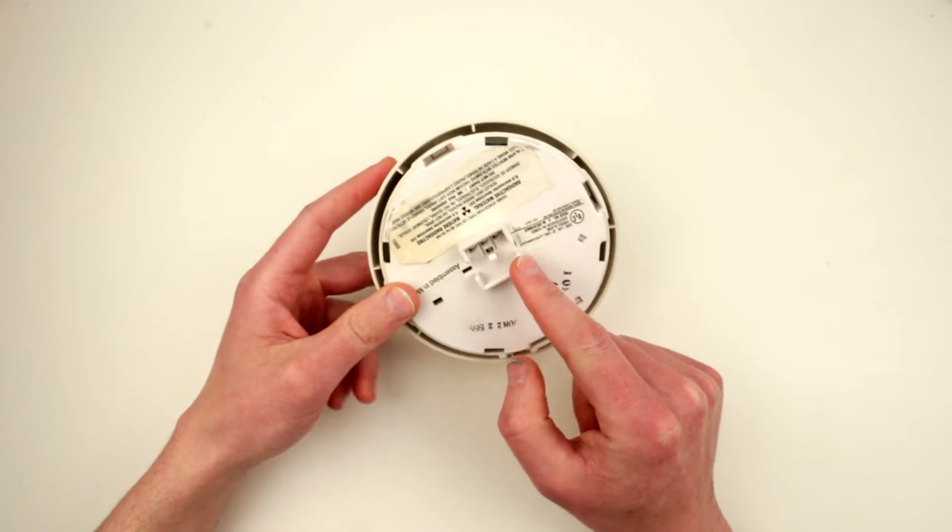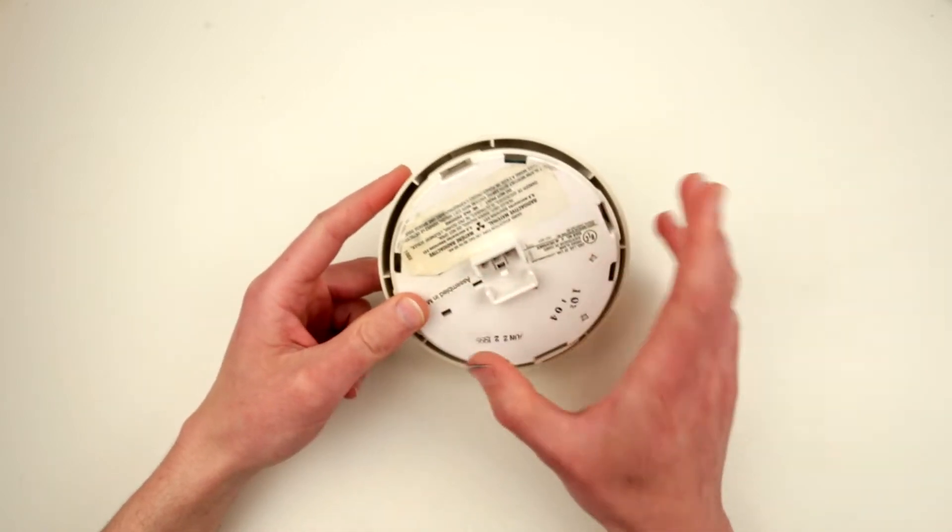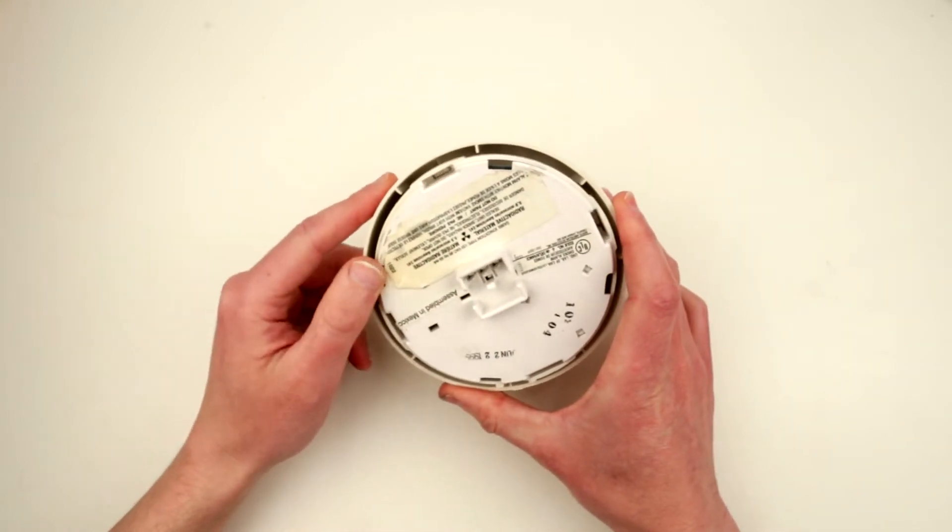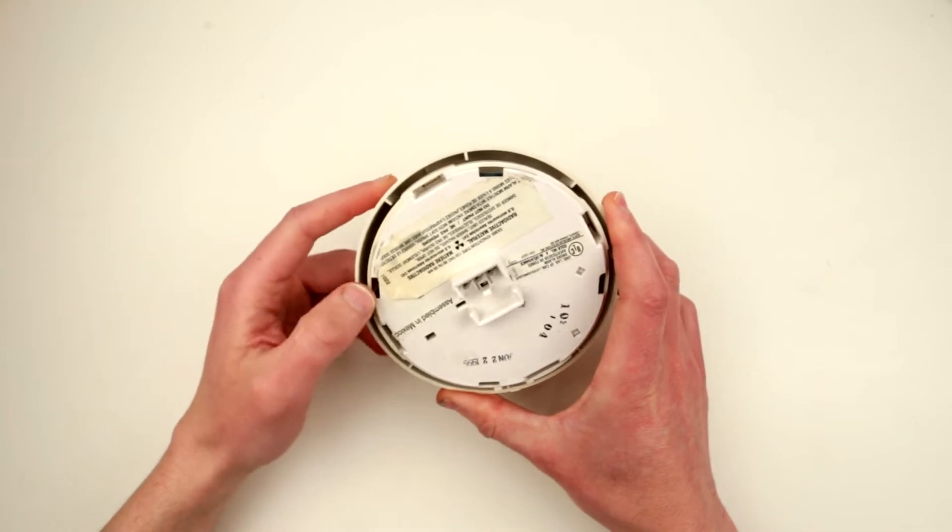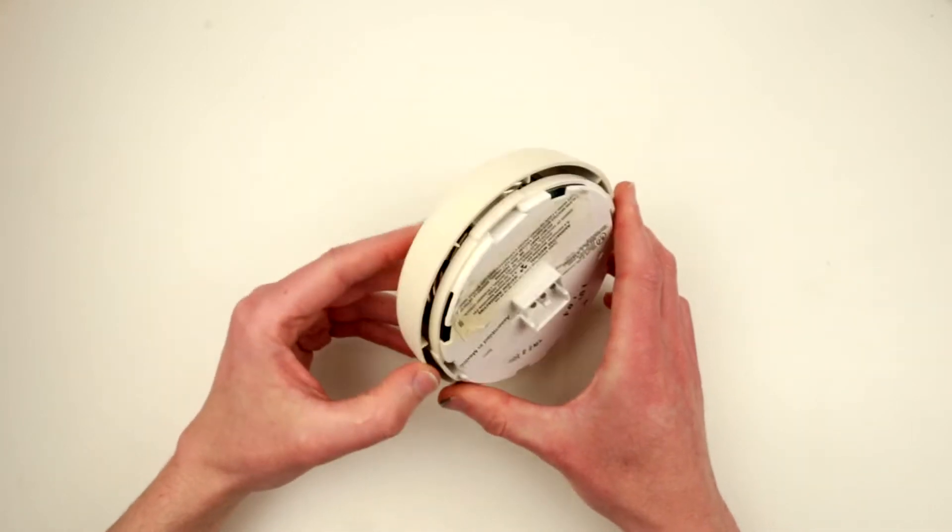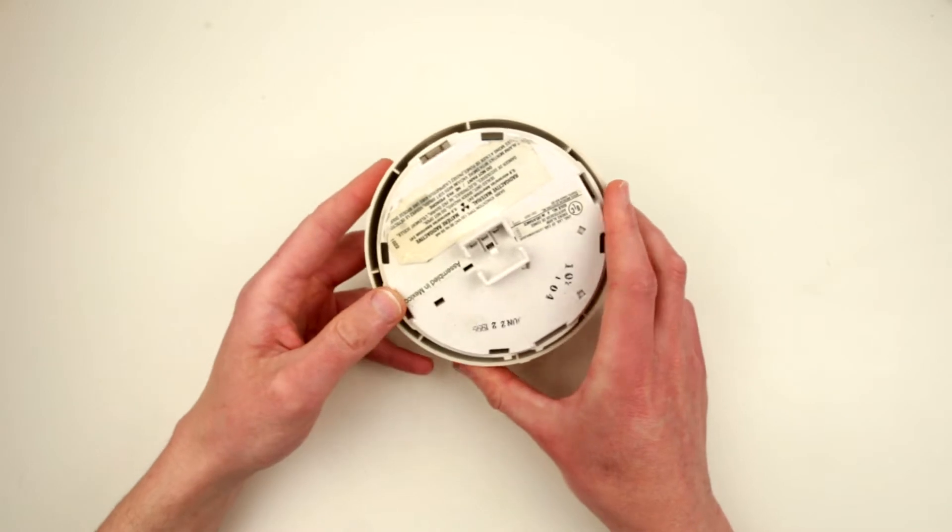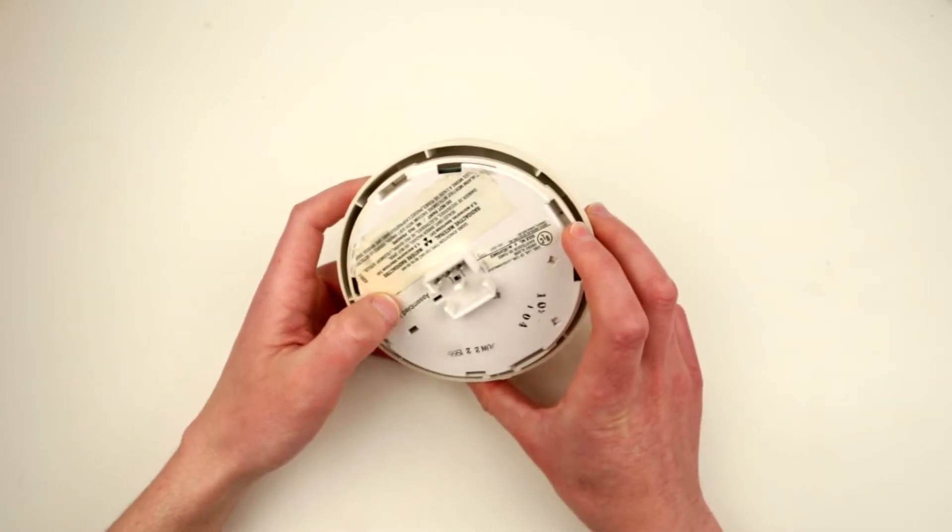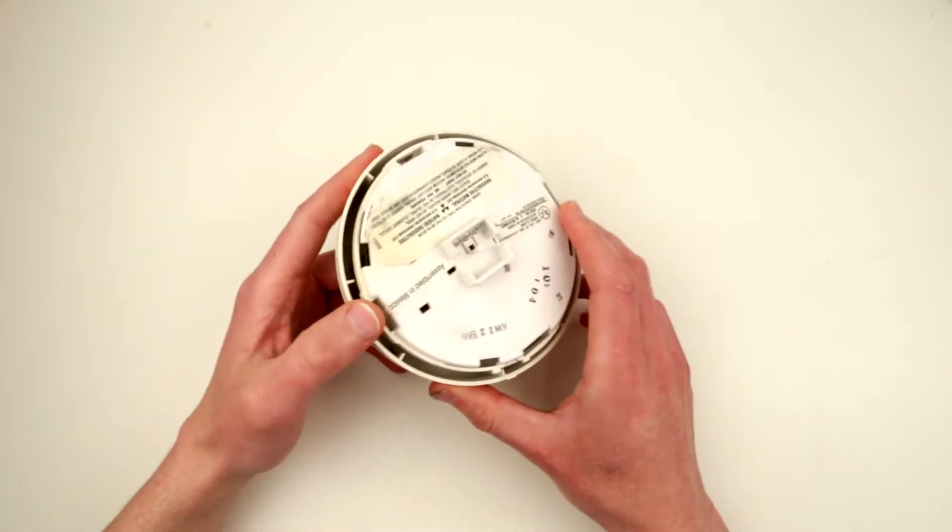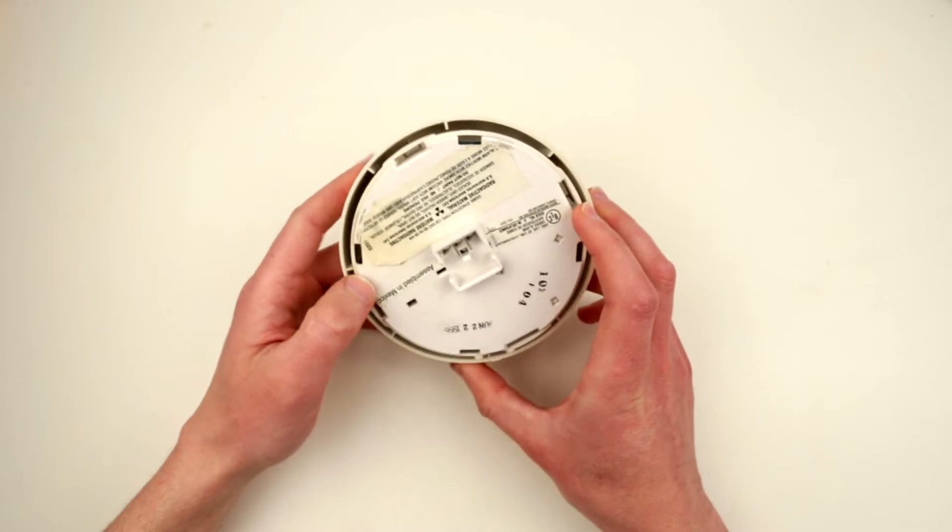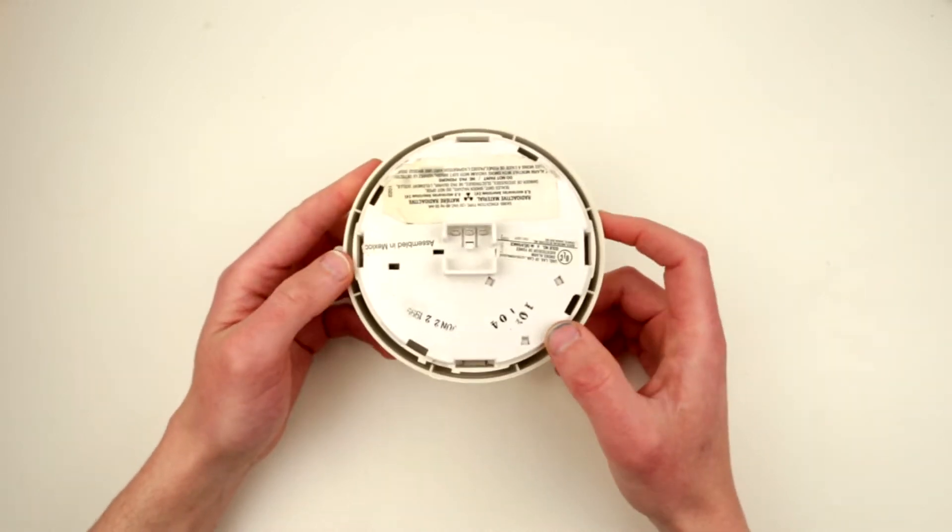But imagine if one, for example in the kitchen, starts beeping, like all of them in the basement, upstairs, everywhere, in the garage, whatever, start beeping. So it's quite a good feature I think, which some modern smoke alarms which are not connected, completely independent, are lacking. So anyways, let's take a look at what's inside.